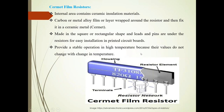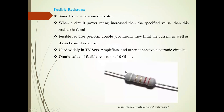Cermet film resistors provide stable operation at high temperatures because their values do not change with changing temperature. Fusible resistors are similar to wire wound resistors, but they are fused once they exceed a specific value. They perform double duty: limiting current as well as acting as a fuse. They are used in TV sets, amplifiers, and other expensive electronic circuits. The nominal value of these resistors is less than 10 ohms.